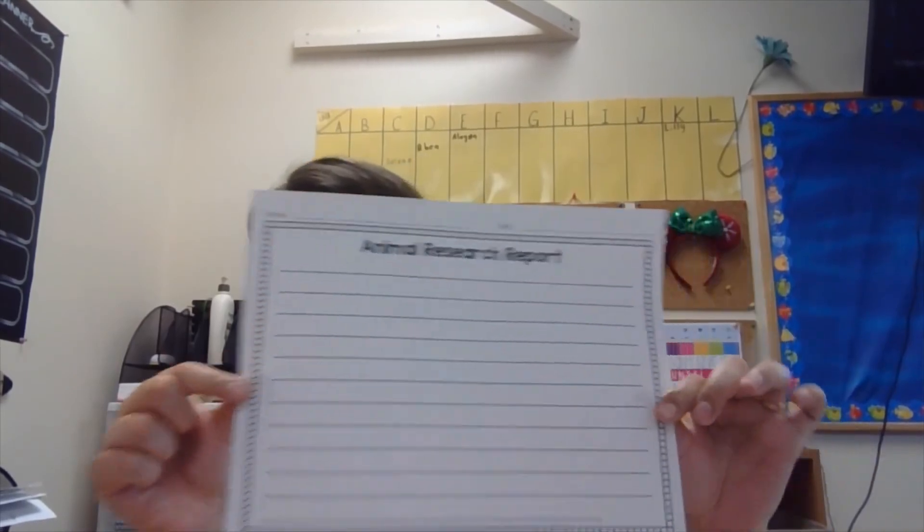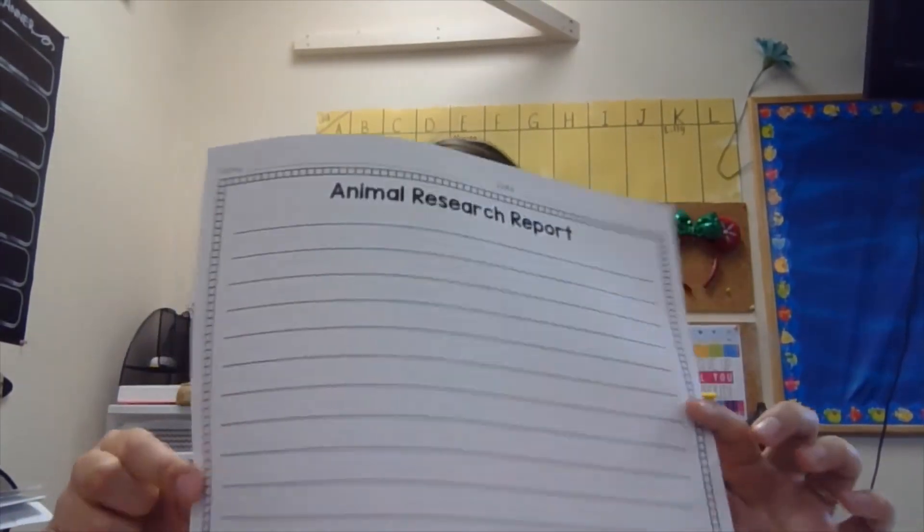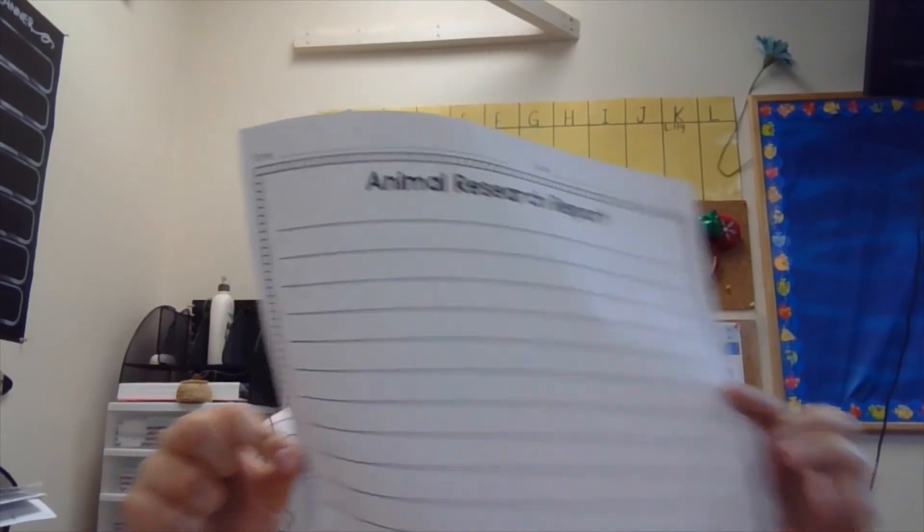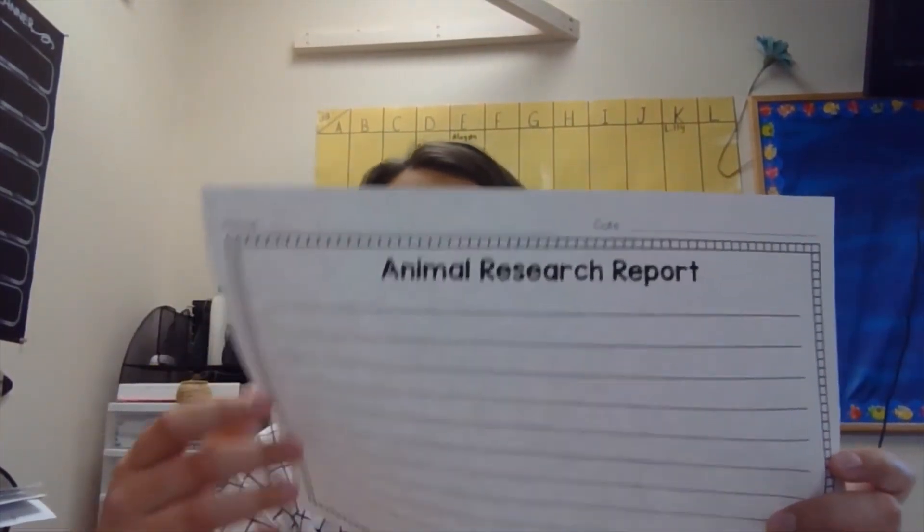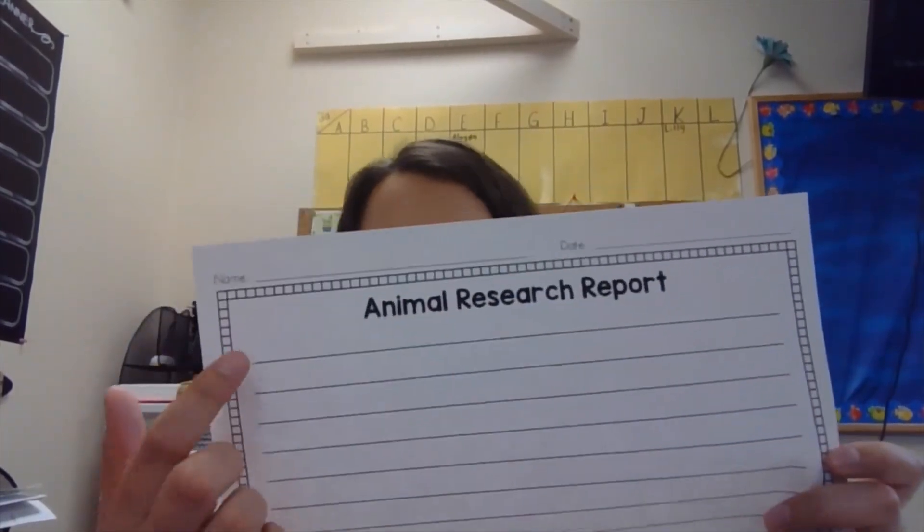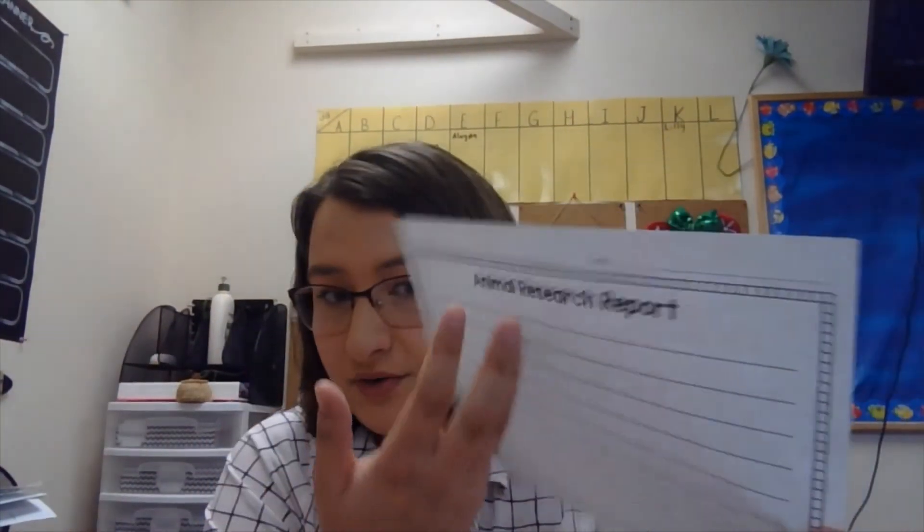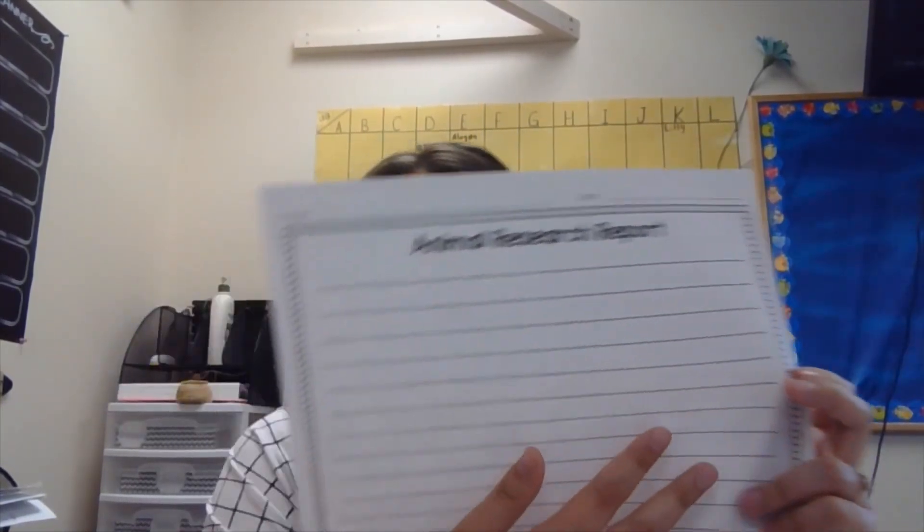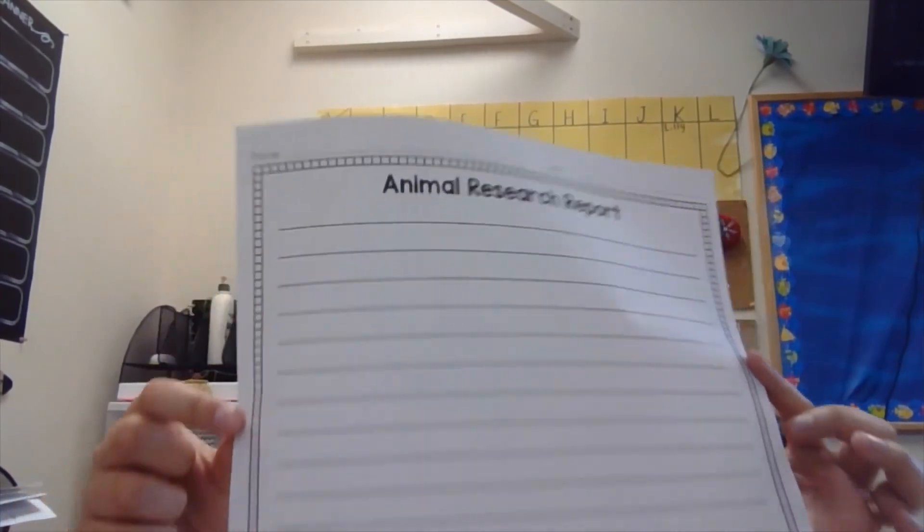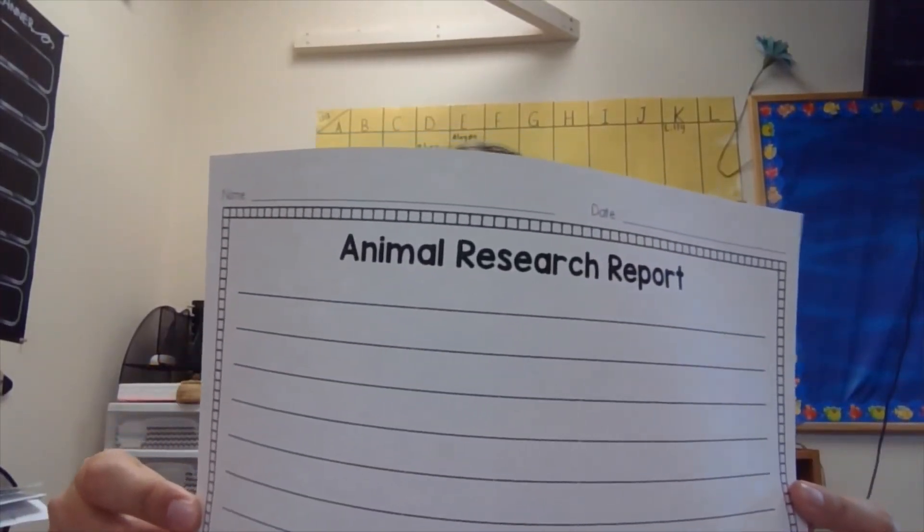So if you're ready for animal research report, it looks like this. You've been researching your animal all week. Now it's time for you to write your report. So for this, I want you to tell me all about your animal, whether that is a turtle or a penguin. I want you to write all about it. So start with, I chose whatever animal you chose. I want to see all of this stuff filled up. I want you to write so much about your animal that I know a bunch of stuff that I didn't know before because you wrote your report.